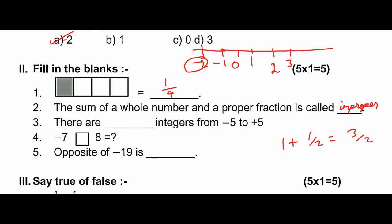Next: there are dash integers from minus 5 to plus 5. So counting from minus 5 to plus 5: minus 4, minus 3, minus 2, minus 1, zero, 1, 2, 3, 4 - total 9 numbers. Next: minus 7 box 8 is equal to dash - you need to fill in greater than or less than. Minus 7 is less than 8.